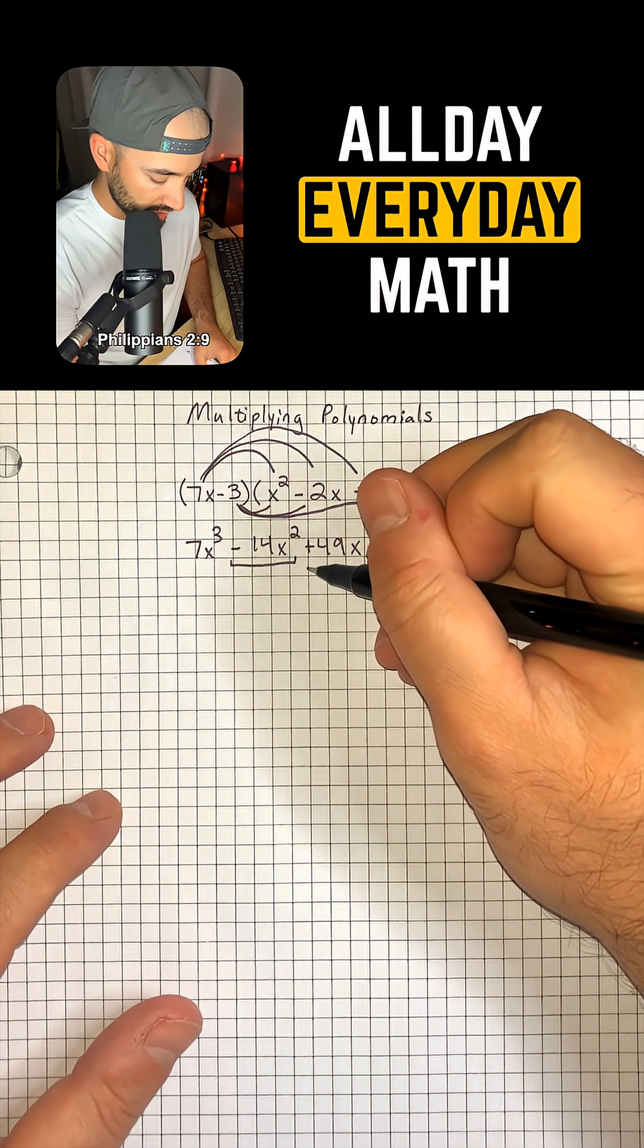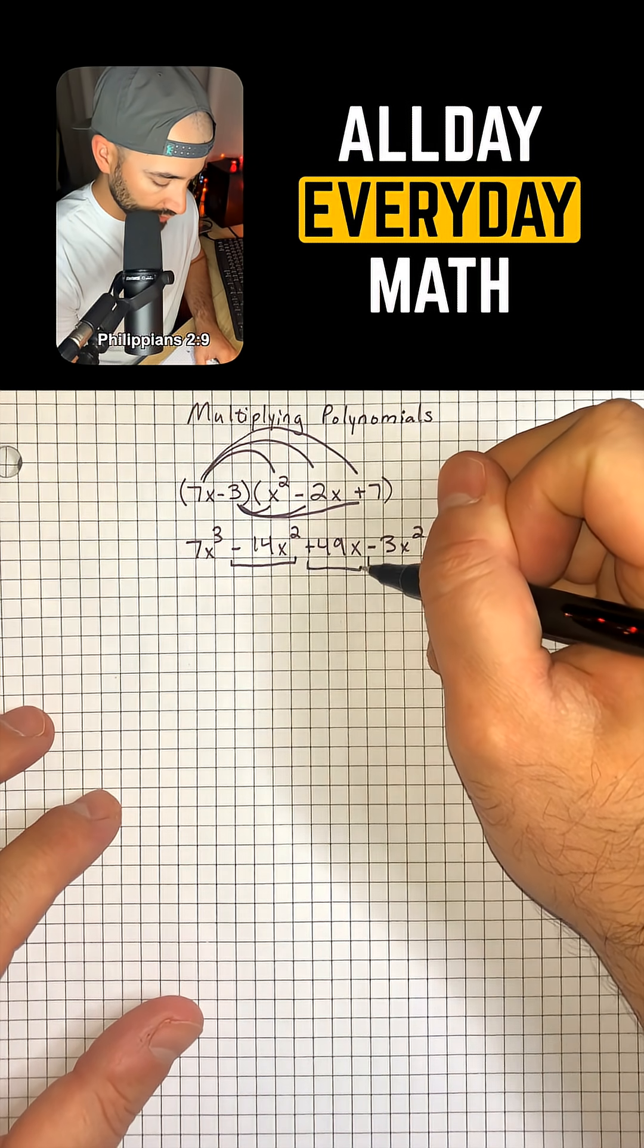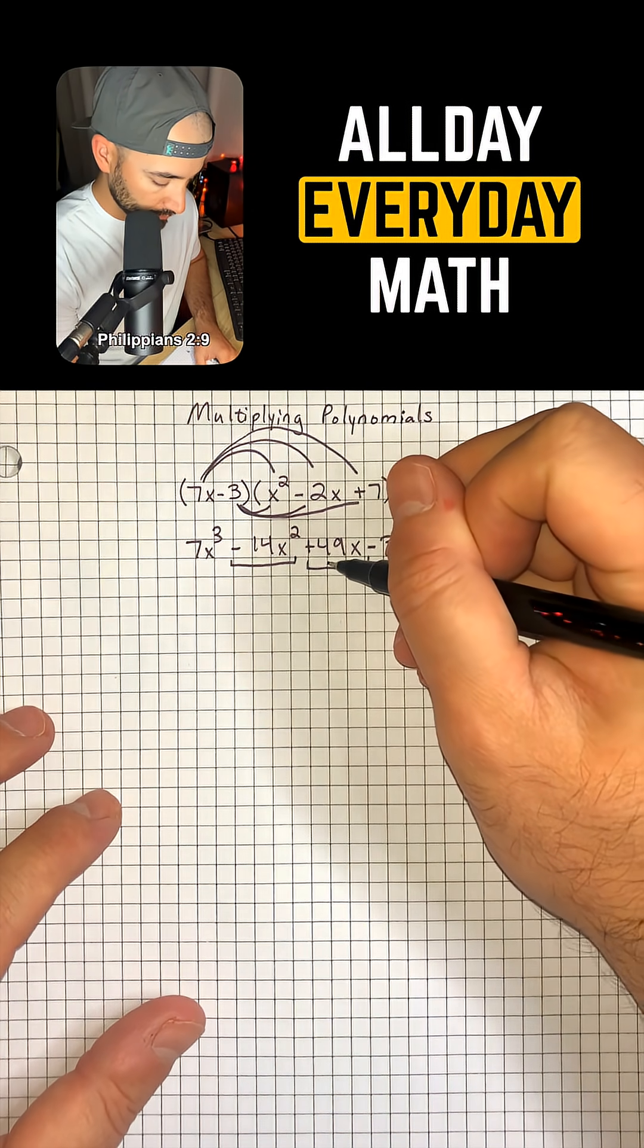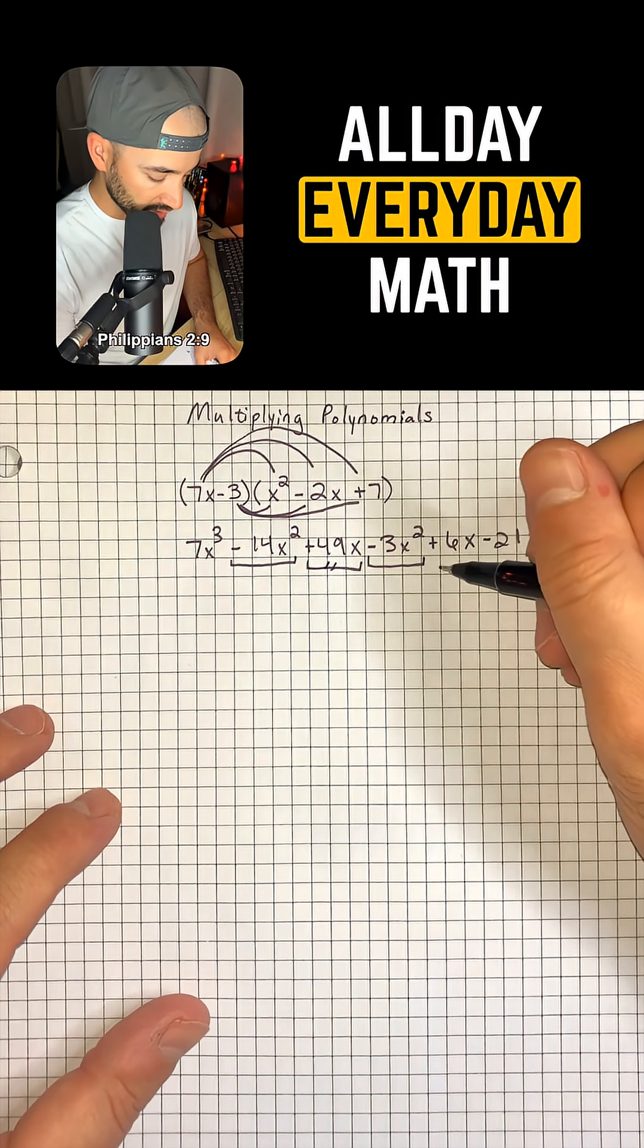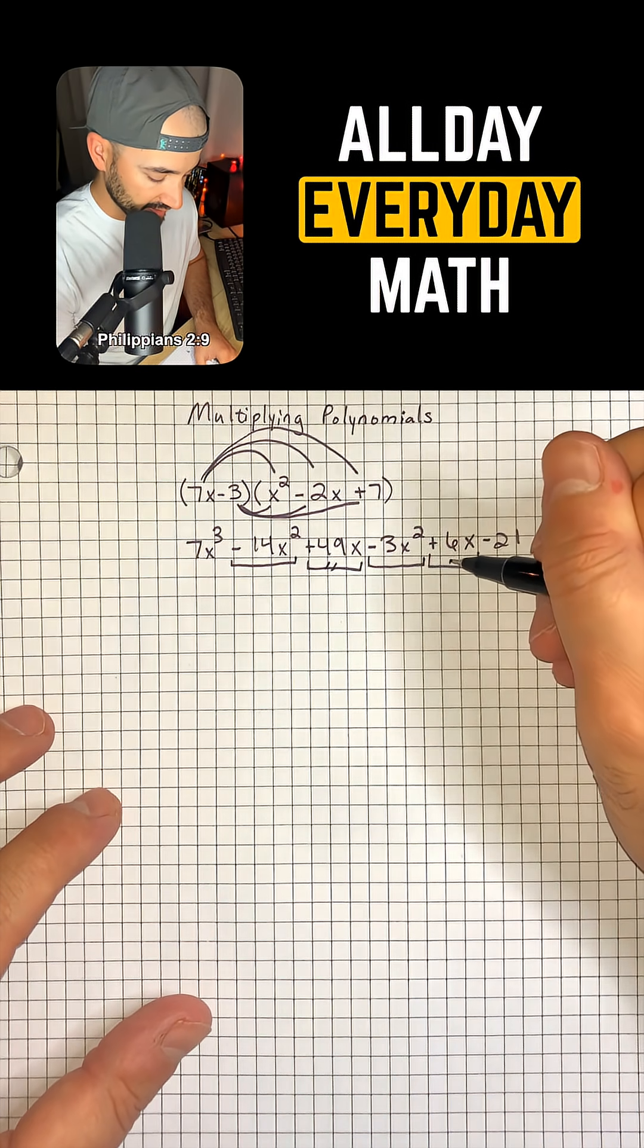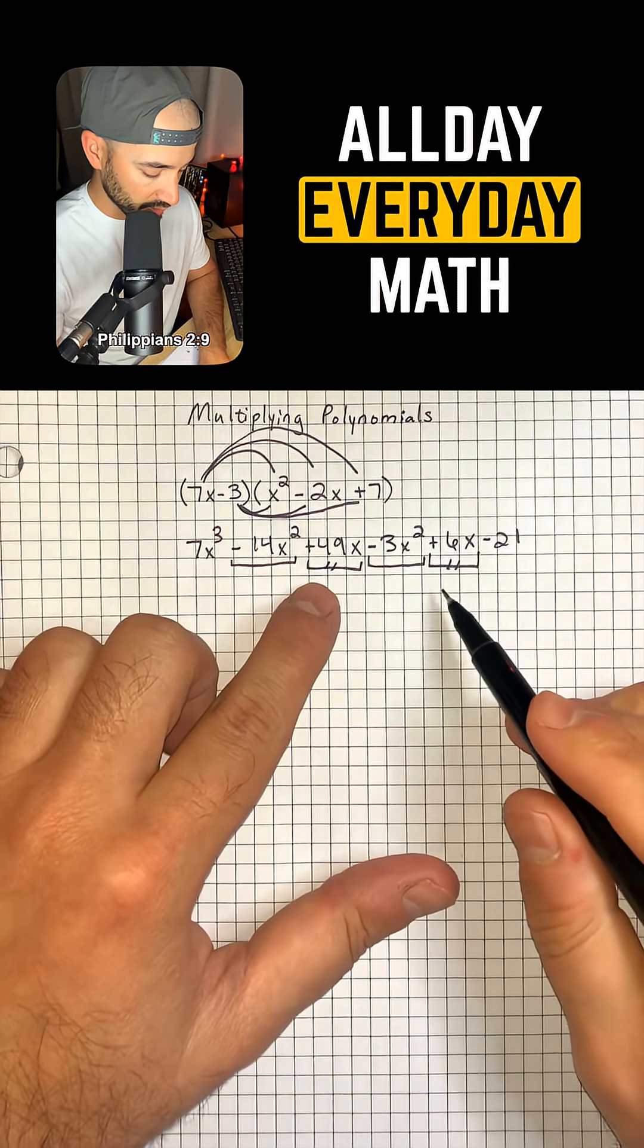And then I also have my plus 49x. I'm going to put two dashes through it so I know that one lines up. And that one's going to line up with plus 6x.